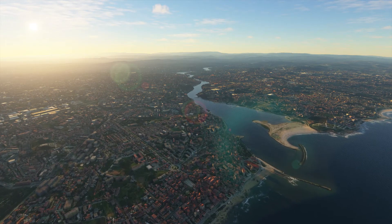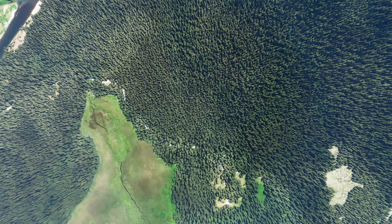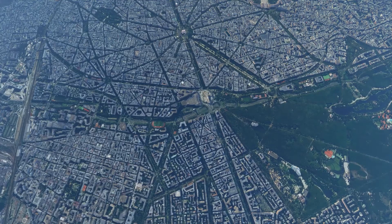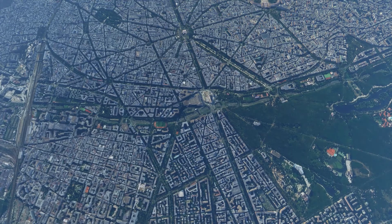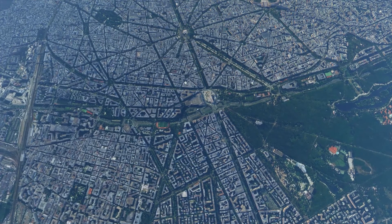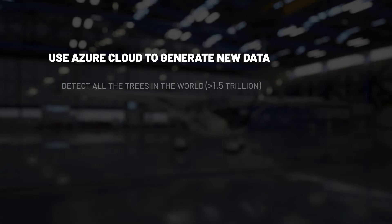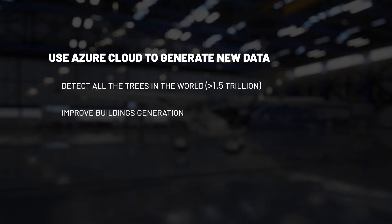We got all those data, but then we needed really more. The reason is because we still didn't know where to place trees, what shape a building should have, what color its roof should be, or what type of roof it has. In order to generate those additional data, we relied on Azure cloud computing. Azure allowed us to run AI algorithms and computer vision algorithms to detect all the trees in the world — which we estimate at more than 1.5 trillion — to improve the building generation system by detecting roof color and roof type, and to add missing building information where we don't have it in our data sources.